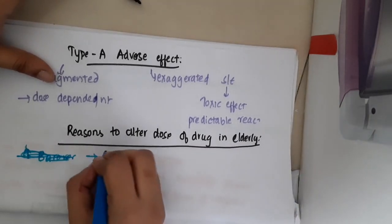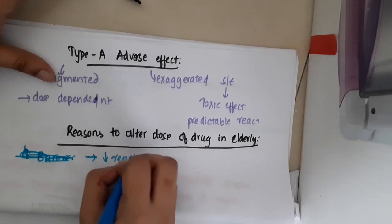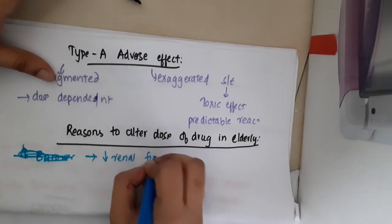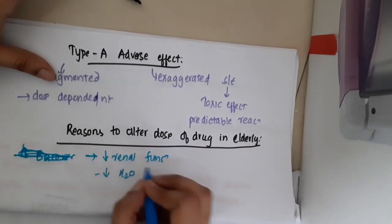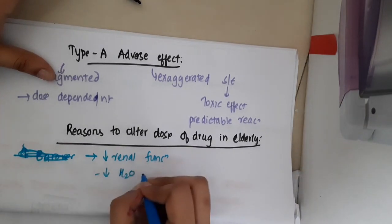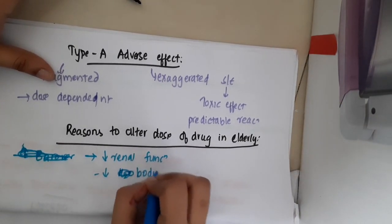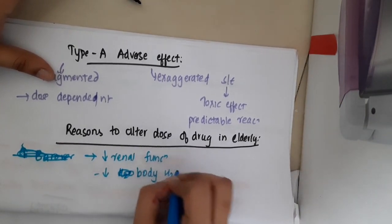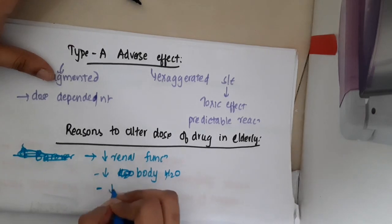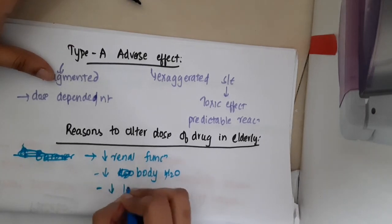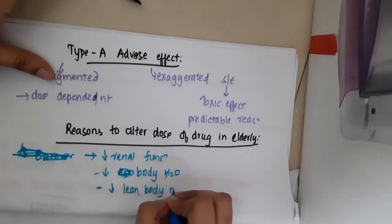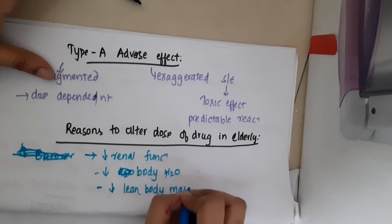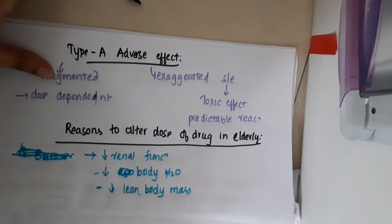These include decreased renal function — obviously there is decreased renal function in elderly — decreased water, that is body water content, and it can also be due to decreased lean body mass. All these are the reasons for which you should alter the doses in elderly.